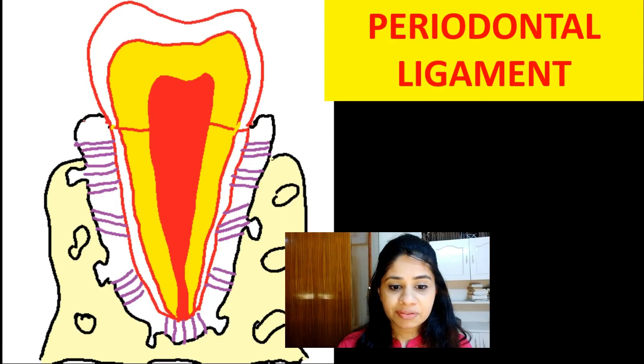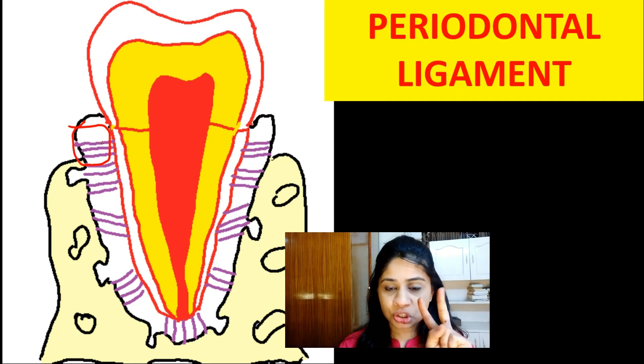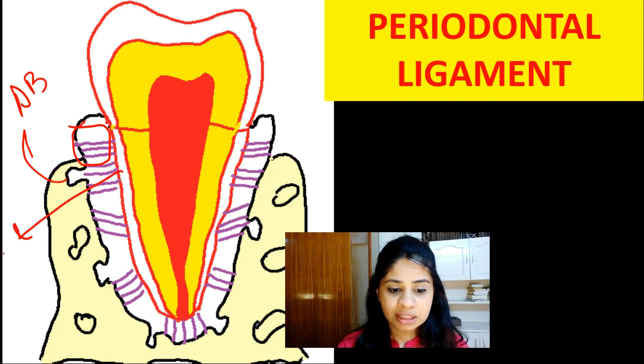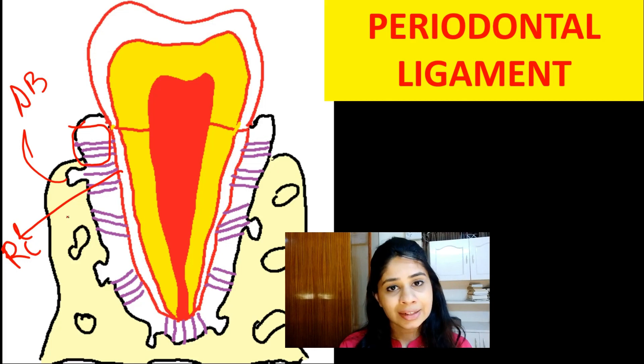Hello everybody, I am Dr. Smeha and welcome to the Periohub. Today we will talk about another very important basic structure of the periodontium, which is the periodontal ligament. Periodontal ligament fibers form a meshwork and stretch between two tissues: the alveolar bone on one end and the root cementum on the other.